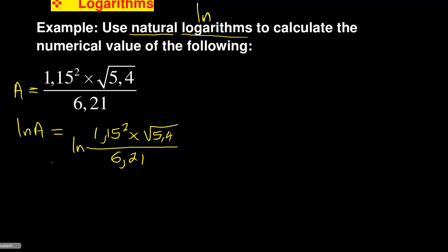Now you continue to express this. The square root sign is something you need to deal with. ln A equals ln of 1.15 squared times - remember the laws of exponents - the square root is the same as 5.4 to the power 1/2, over 6.21.